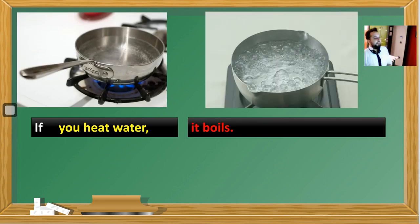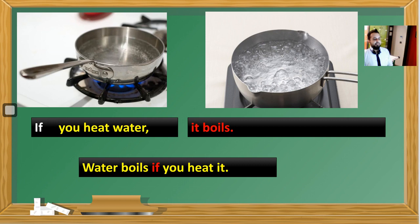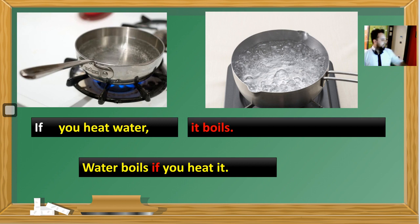Let's see another example: 'If you heat water, it boils.' It's a scientific fact. If we heat water — that's our condition sentence. 'It boils' is our main clause, the result clause. We can change its place too: 'Water boils if you heat it.' As we said, it's flexible — we can change the sentences' places.